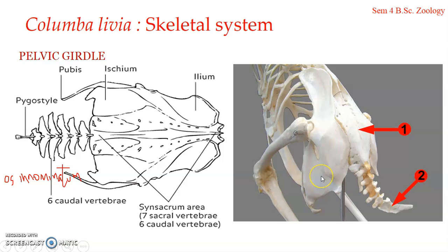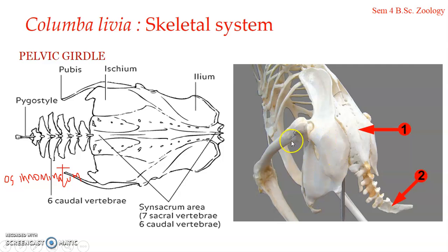The ischium is a dorso-ventrally flattened bone that projects backwards behind the acetabulum and runs parallel to the posterior part of the ilium. The ilium and ischium are fused in some parts but separated in others.